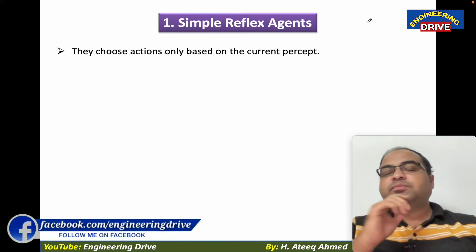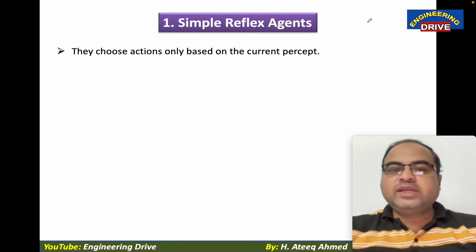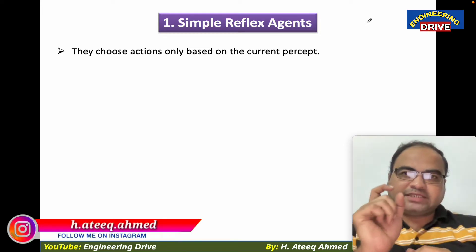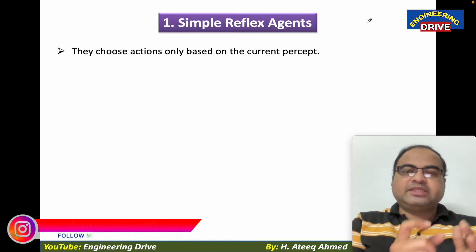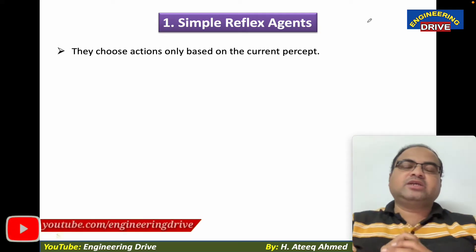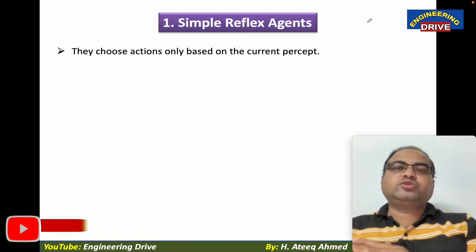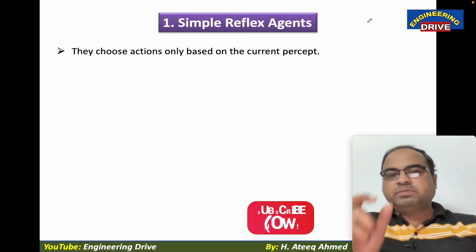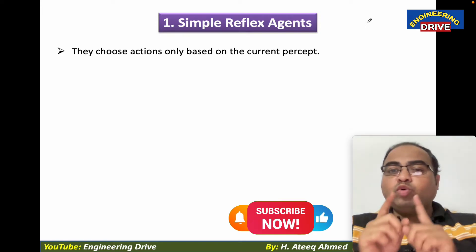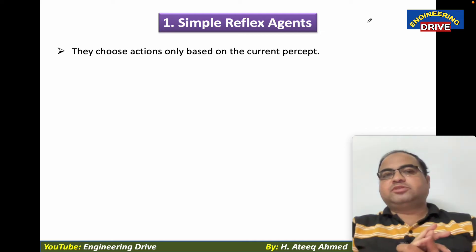So, what are simple reflex agents? They choose actions only based on the current percept. Dear students, we should know what is the meaning of percept. Percept is nothing but the input which is given by the environment to the agent. So, once the input is given to the agent, what the agent should do? It should generate the action. Simple reflex agents will choose actions based on only the current percept. They won't consider the previous percepts.